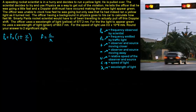The officer was unable to clock how fast he was going but only saw that he had indeed ran a yellow light as it turned red. The officer, having a background in physics, goes to his car to calculate how fast this Mr. Smartypants rocket scientist would have had to have been traveling to actually pull off this Doppler shift.